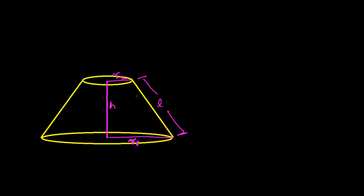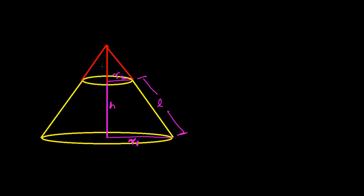We need to find the volume from this given information, but it's really difficult finding the volume without doing some construction. So we're going to complete the cone. After completing, we actually get two cones — one is the whole big cone, and the other is a small cone at the top which was added to the frustum.